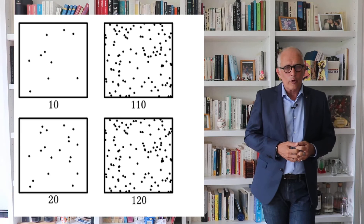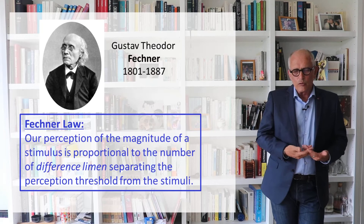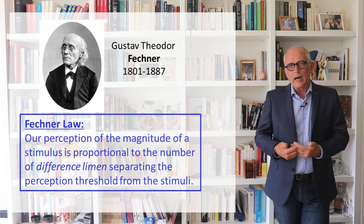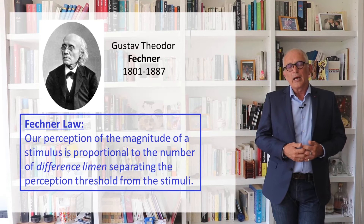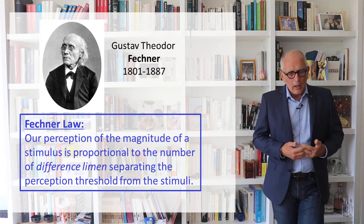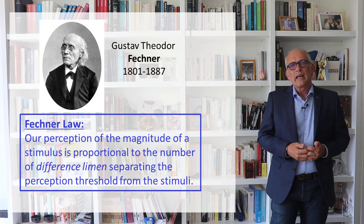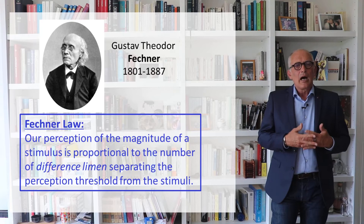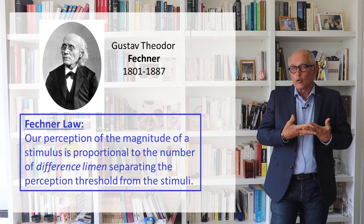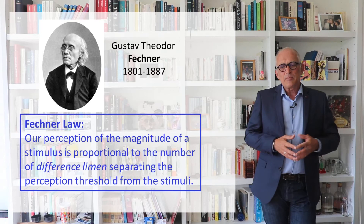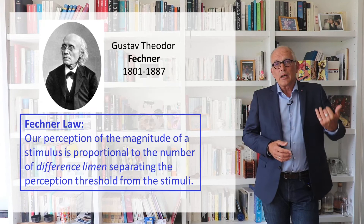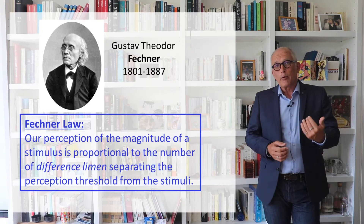But the Weber law in itself is not sufficient for explaining the use of a logarithmic scale in acoustics. We have to add a second psychophysical law discovered by one of Weber's students, Fechner. The idea of Fechner — now very classical in psychophysics — is that when you are facing a stimulus S, the way you identify its perceived level is by starting from the lowest stimulus you can feel and then going step by step toward the actual stimulus, going up one difference limit at a time.